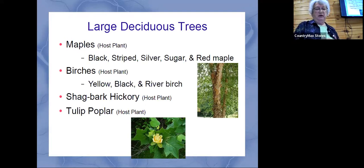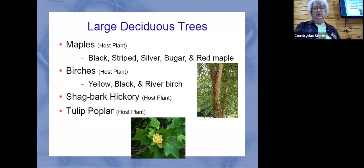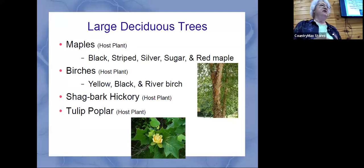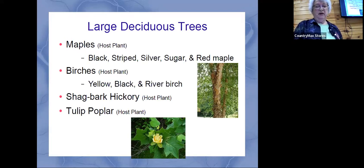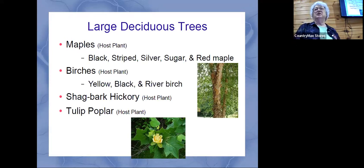A particularly pretty tree is the shag bark hickory — it has a really beautiful bark. You can pick trees that have some interest you like; some trees have really pretty bark. The thing on the bottom is actually a tulip poplar flower — it's really pretty and brings in the bees. The pollinators just love that, and it's really a pretty flower from the tulip poplar tree.